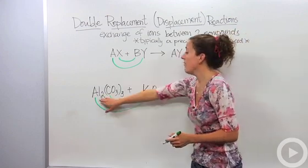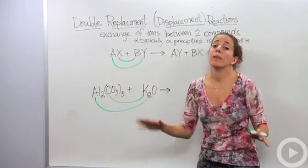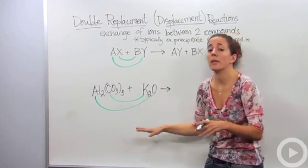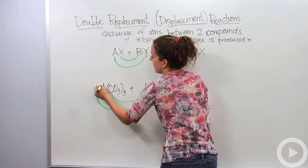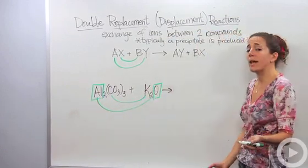So we have these subscripts at the bottom, two, three, and this two. We're actually going to ignore them for now. Do not use those when you're actually making your products. Just ignore them. We'll deal with them when we balance the equation. So we're just going to deal with the metal. The aluminum itself is going to bond with the oxygen. So how do they come together?